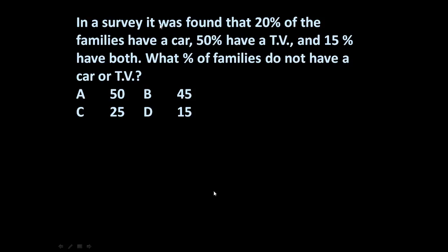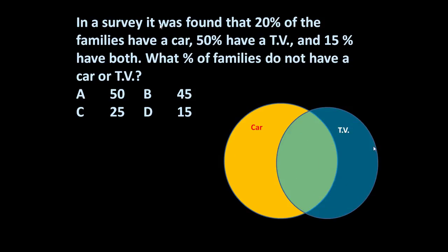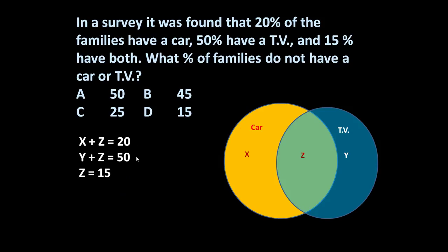Again let us draw circles — one representing families with a car and another for families with a TV. The common portion indicates those having both car and TV. Let X be only-car families, Y be only-TV families, and Z be both. 20% have a car means X plus Z equals 20. 50% have a TV means Y plus Z equals 50. 15% have both means Z equals 15. Solving gives X equals 5, Y equals 35, and Z equals 15.